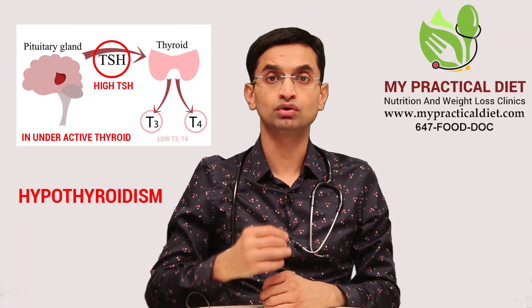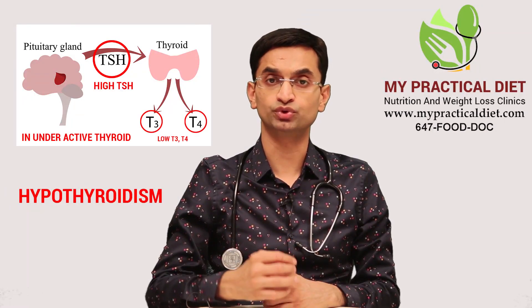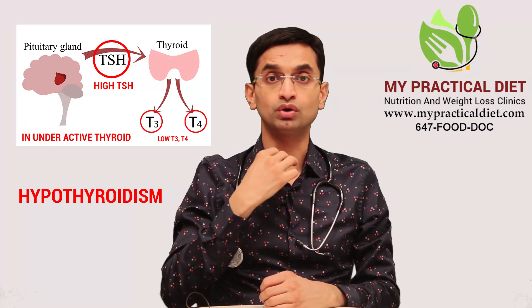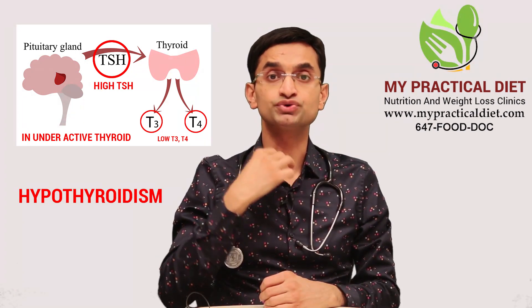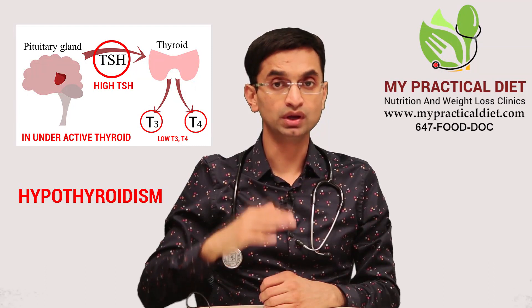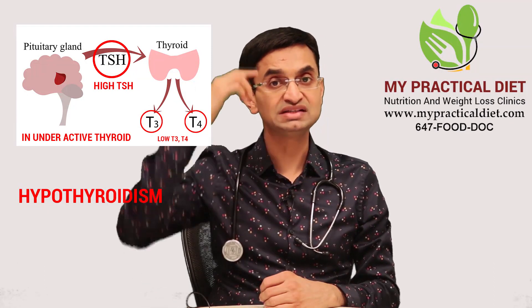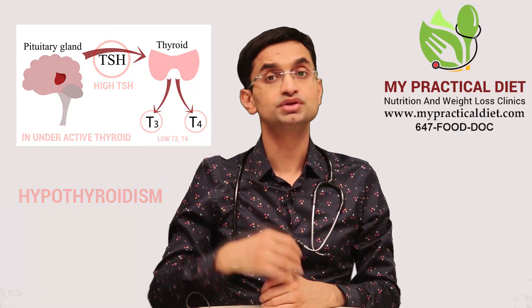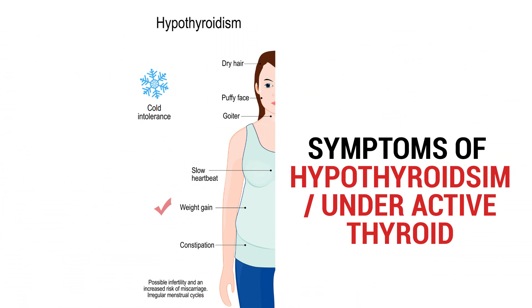The second situation is an underactive thyroid, also known as hypothyroidism. In this case, T4 or T3 levels, or both, will be low and the TSH level will be high. Some of the symptoms of low thyroid are weight gain, low energy, feeling depressed, constipation, and others.